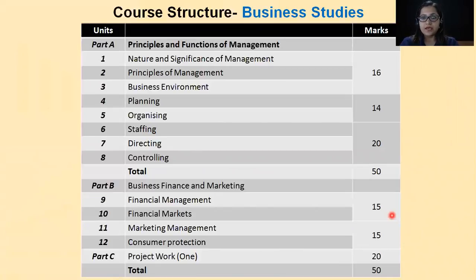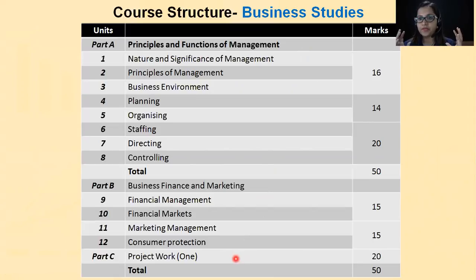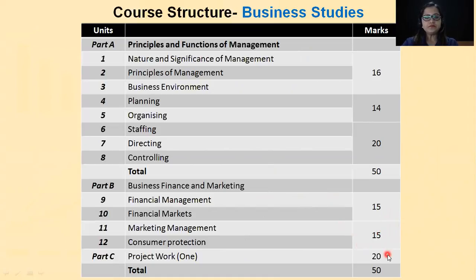Now let's talk about Business Studies. Similarly, in Business Studies we have three parts and two books. The first part is on Principles and Functions of Management. The second part is on Business, Finance and Marketing. The third one is your Project Work. Only one project file needs to be prepared. Part A is of 50 marks, Part B is of 30 marks, and Project Work is of 20 marks — so 100 marks in total.